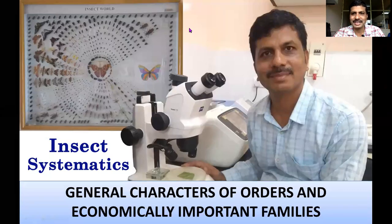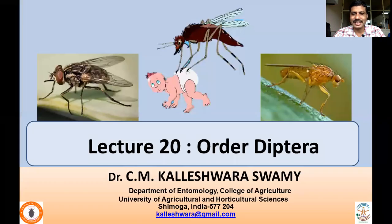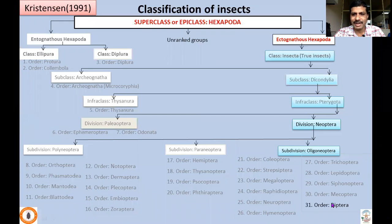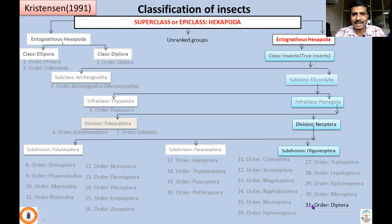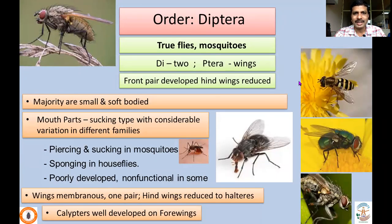Welcome to the insect systematics lecture series. In this lecture, I will be talking about Order Diptera — its characteristic features and economically important families. We are reaching the end of the classification framework given by Kristensen, where the last order, the 31st order, is Diptera. Excluding non-insect hexapods, the true insect group consists of 28 insect orders as of now.